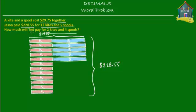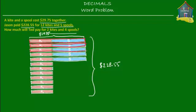We need to find how much Ted pays for 2 kites and 4 spools, but first we need the individual costs of a kite and a spool. Looking carefully at the model, I can see 5 pairs of one kite and one spool. The first pair is $29.75, the second pair is $29.75, the third pair is $29.75, the fourth pair is $29.75, and the fifth pair is $29.75.